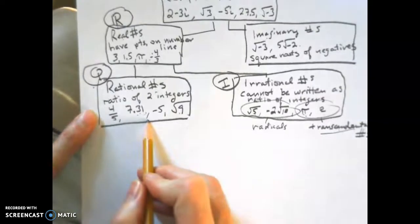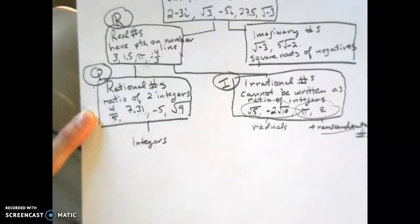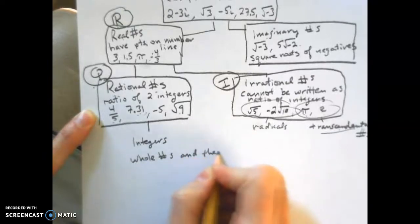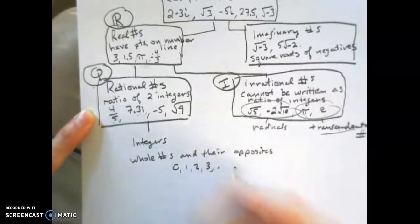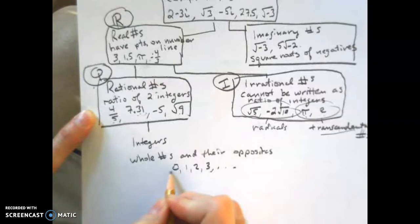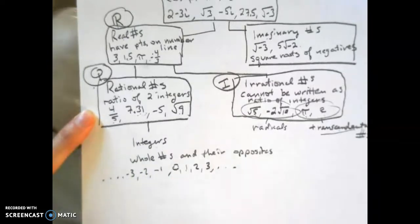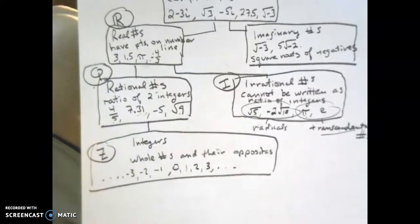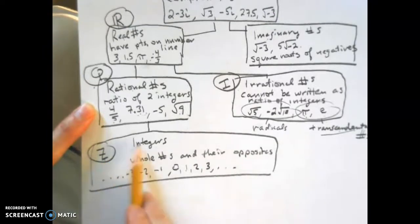Under rational numbers, we break down further into integers. Integers are a subset of the rational numbers — they are whole numbers and their opposites. Whole numbers are 0, 1, 2, 3, and so on, and their opposites are negative 1, negative 2, negative 3, going on forever in both directions. To abbreviate integers, we use a capital Z, which comes from the German word 'Zahl' or similar. We can't use I again since we already used it for irrational numbers.